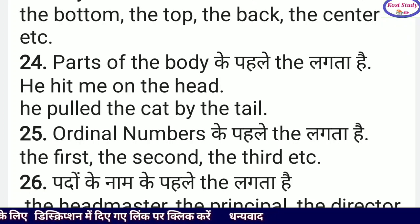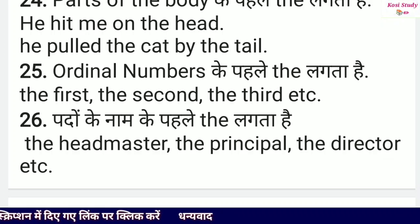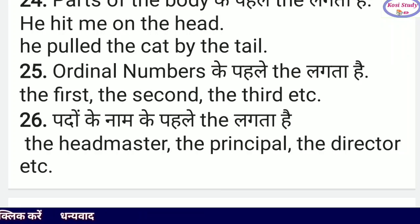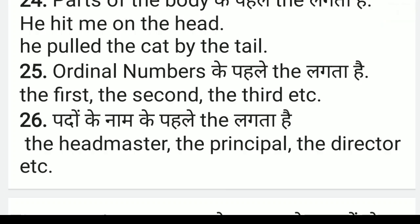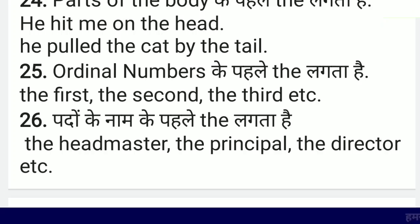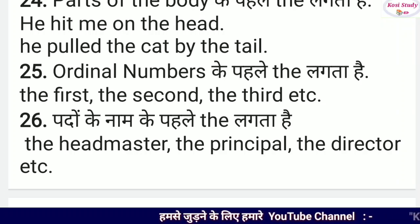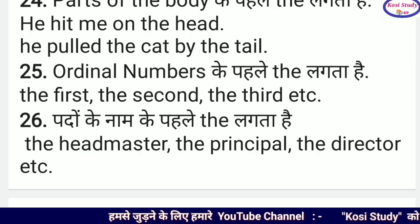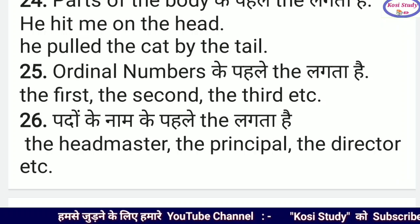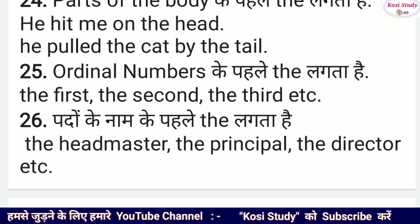Ordinal numbers के पहले 'the' लगता है। Dates जब ordinal numbers में लिखी जाएं — जैसे 1st, 2nd, 3rd, 4th, 5th — तो 'the' का प्रयोग होता है, जैसे The 1st of March। परंतु जब date को cardinal number में लिखा जाए — जैसे सिर्फ '1 March' — तो 'the' का प्रयोग नहीं किया जाता। Similarly, अगर ordinal number शब्दों में लिखे हों — यानि पहला, दूसरा, तीसरा — तो 'the' का प्रयोग जरूर होगा।